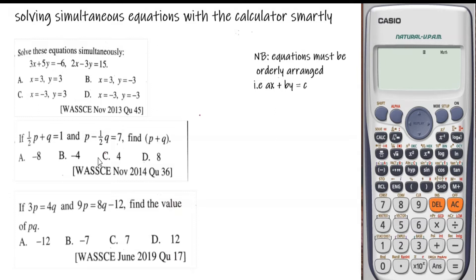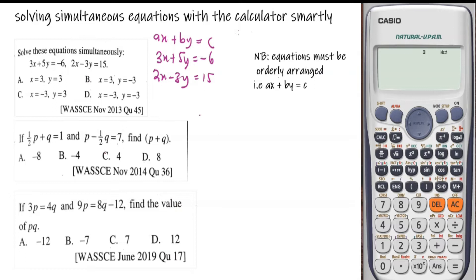Equation 1 is 3x plus 5y equal to negative 6, and equation 2 is 2x minus 3y equal to 15. Comparing both equations to the standard form ax plus by equal to c, we realize that they have been perfectly arranged in that order. Therefore we can go ahead to use the calculator.